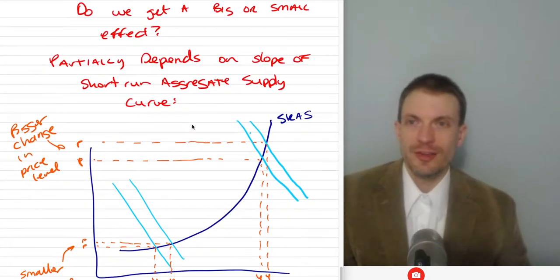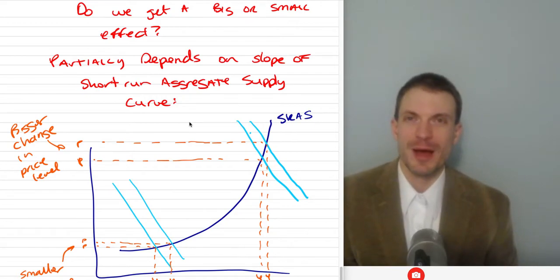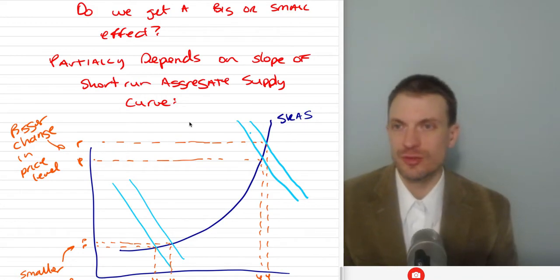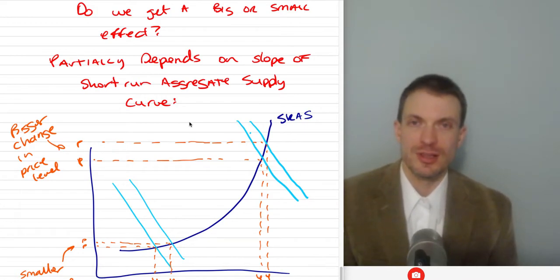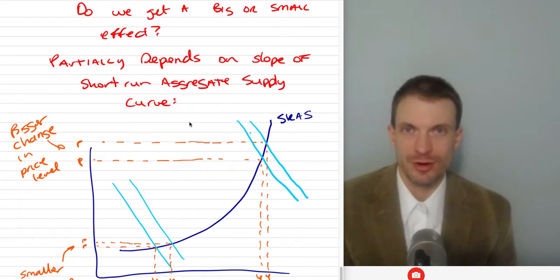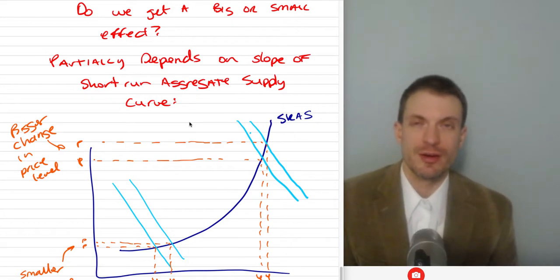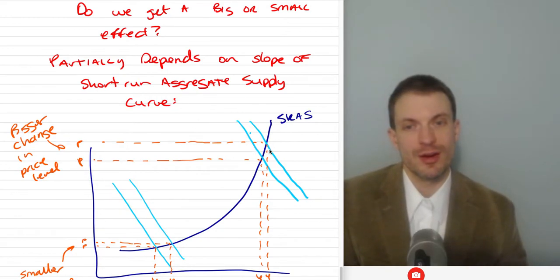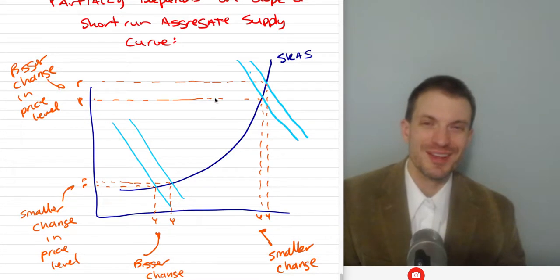The last question is, especially relative to a policy decision of increasing aggregate demand through decreasing interest rates, increasing government spending, or reducing taxes, do we get a large or small effect? Partially, this depends on the slope of the short run aggregate supply curve and your macroeconomic theory. If you believe short run aggregate supply is relatively vertical, then if we cut interest rates, increase government spending, or cut taxes, we'll get a rightward shift of aggregate demand. That should have very little effect on output and should have a big effect on inflation. That's bad.